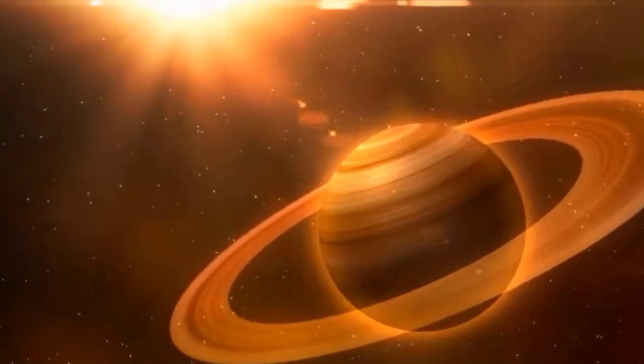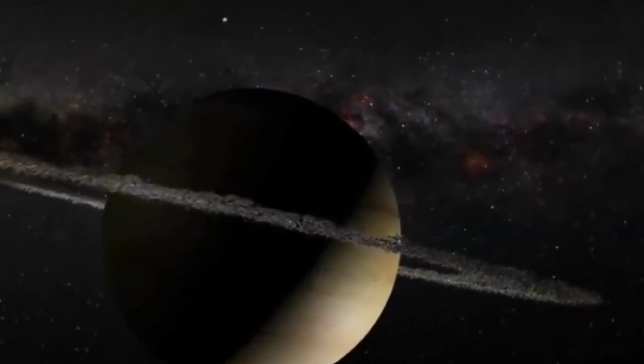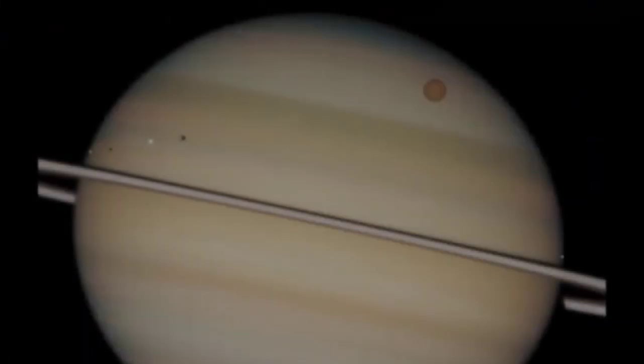After Jupiter comes Saturn, another gas giant. It is famous for its beautiful rings. Saturn has at least 60 moons.